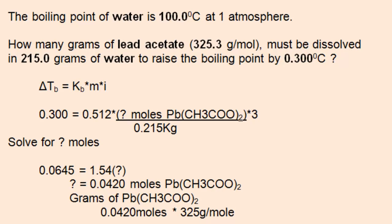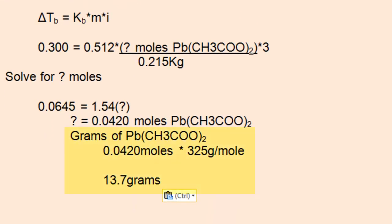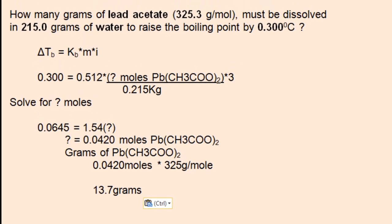To determine grams of lead acetate, multiply the moles that was just calculated by the molecular weight or molar mass of lead acetate, which is given to us as 325 grams per mole. So the grams of lead acetate needed to change the boiling point of water by 0.3 degrees C is 13.7 grams.